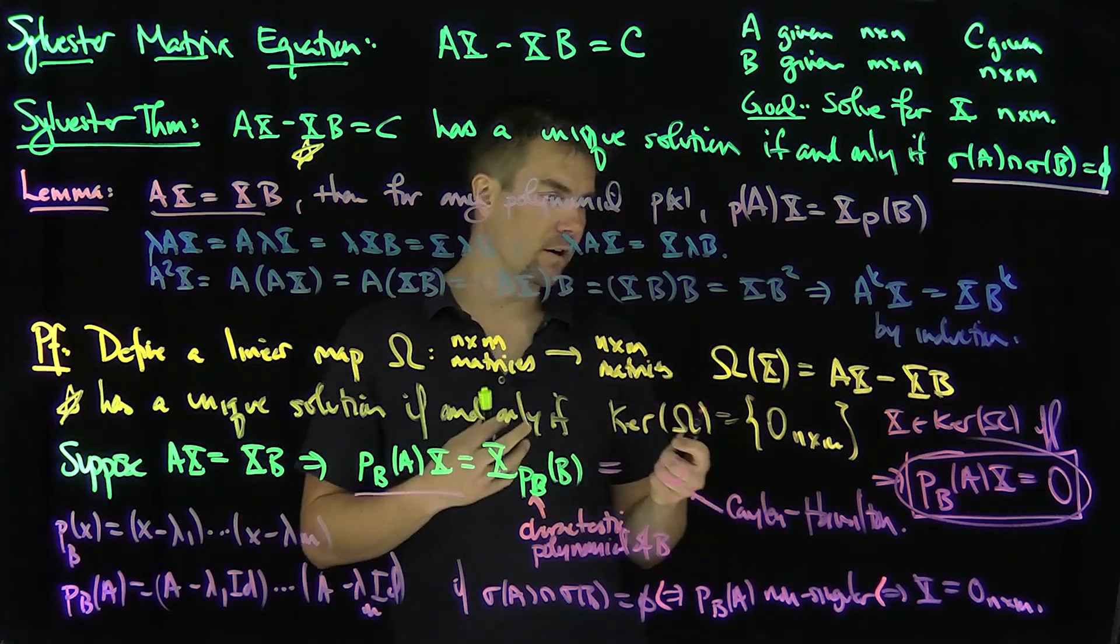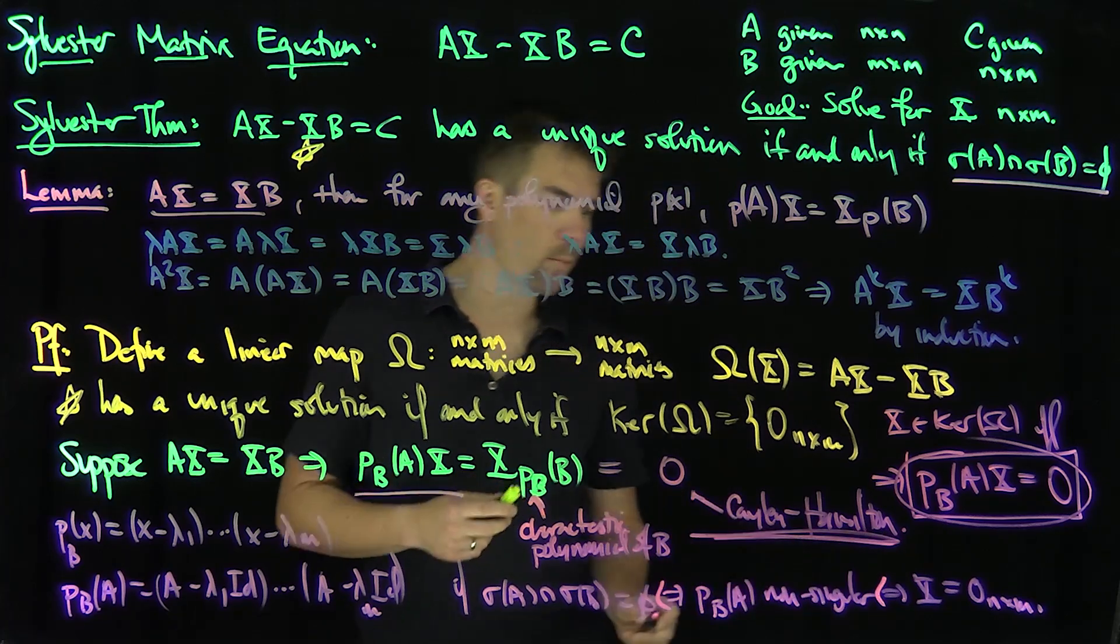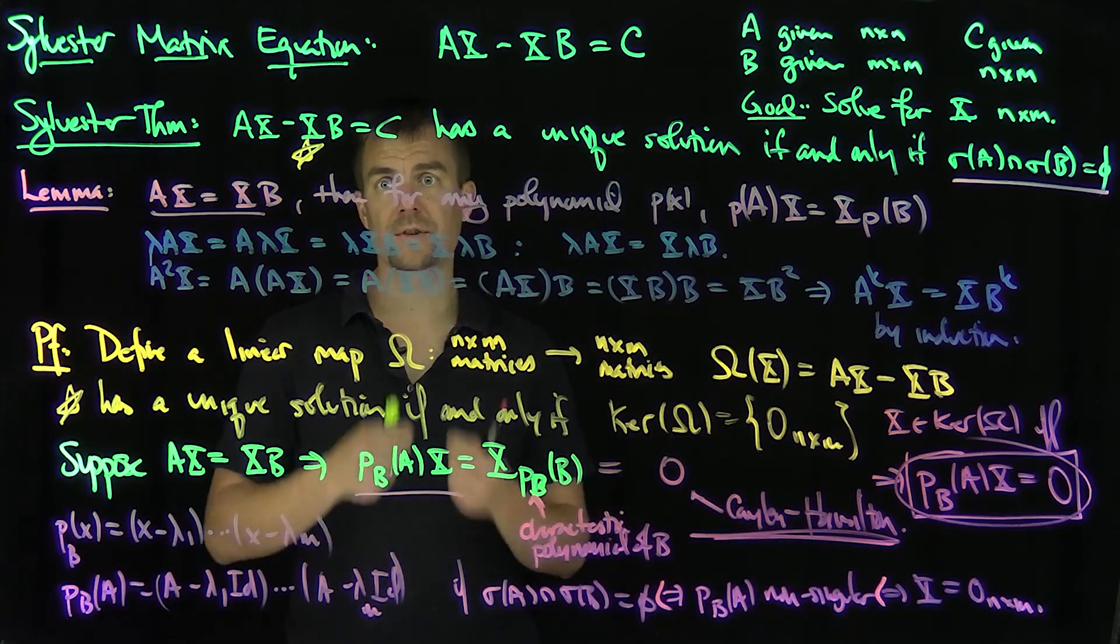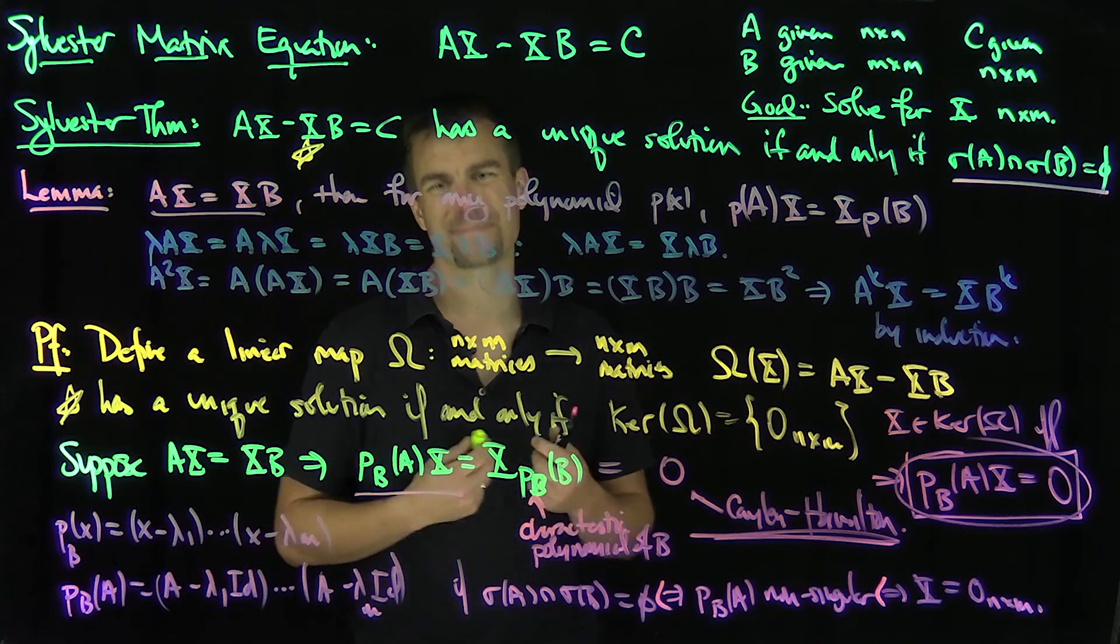So that's the Sylvester theorem for solving matrix equations. We see how in a very deep way we use the Cayley-Hamilton theorem and algebraic structures of how these matrices act when there's a matrix equality. Thank you very much.